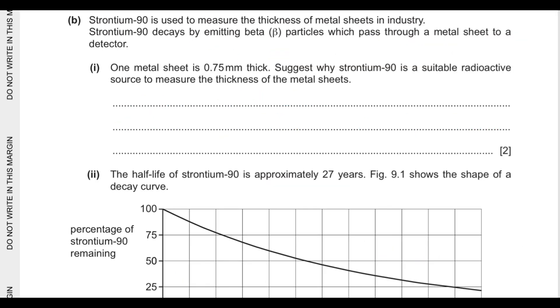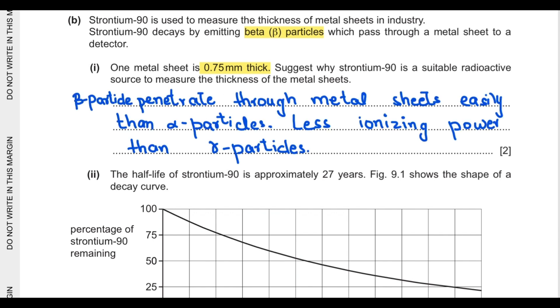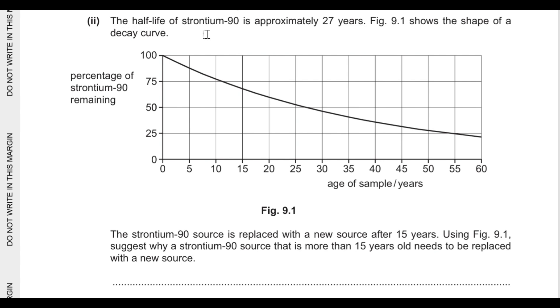Part B says strontium-90 is used to measure the thickness of metal sheets in industry. Strontium-90 decays by emitting beta particles which pass through metal sheets to a detector. One metal sheet is 0.75 mm thick. Suggest why strontium-90 is a suitable radioactive source to measure the thickness of metal sheets. Because beta particles penetrate through metal sheets more easily than alpha particles and they are also less ionizing than gamma particles.